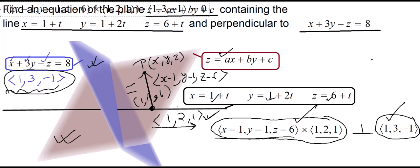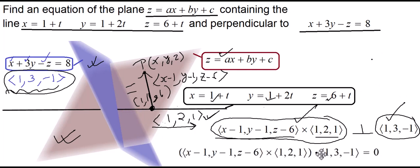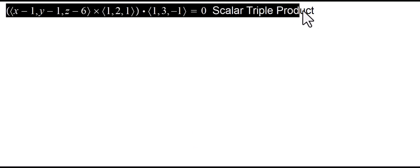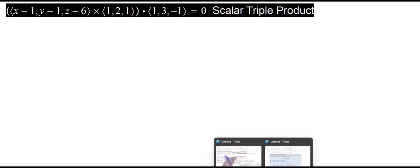We have an equation in x, y, and z. We can simplify it using a scalar triple product, or do it longhand. Using a shortcut from our open stacks textbook, we take the value of the determinant formed by the components of the vectors as rows, and use the property that we can interchange the cross and dot to calculate the scalar triple product.